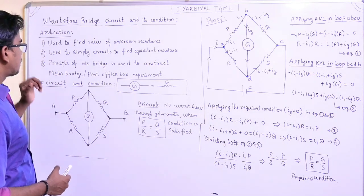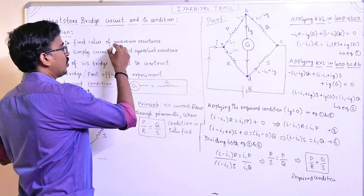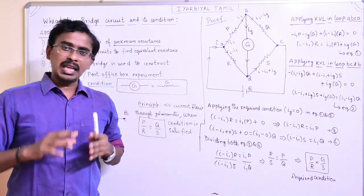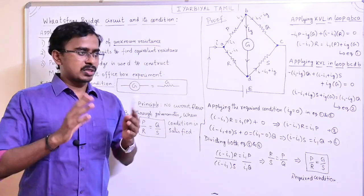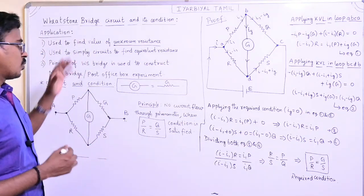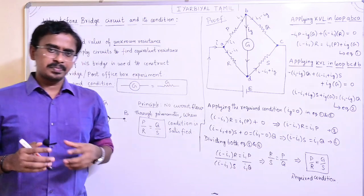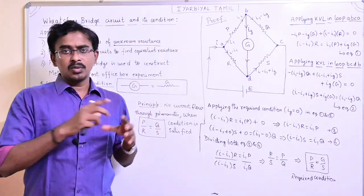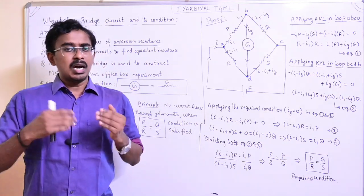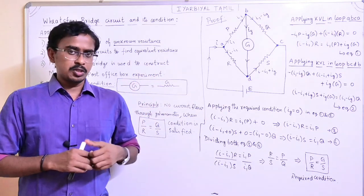If you look at the Wheatstone Bridge, one application is to find the unknown value of an unknown resistance. If you have a resistor and you don't know its resistance value, you can use the Wheatstone Bridge condition to fix it and find that unknown resistance. That is one use. We can also use it to simplify circuits and find equivalent resistance.